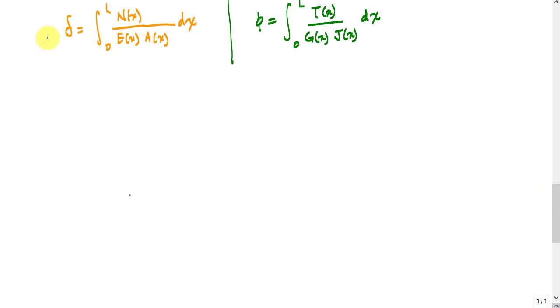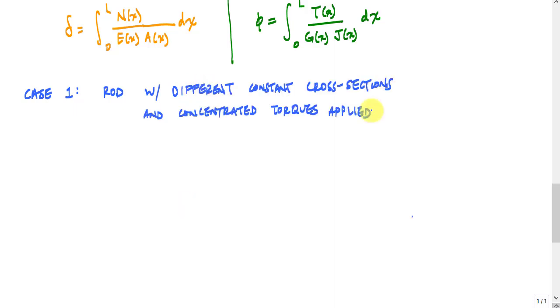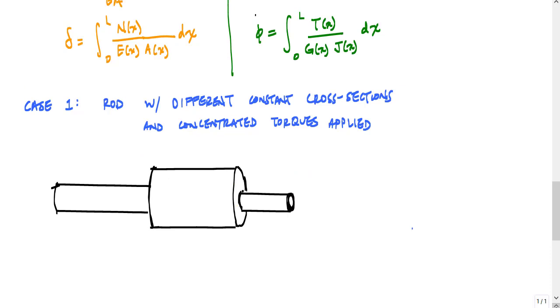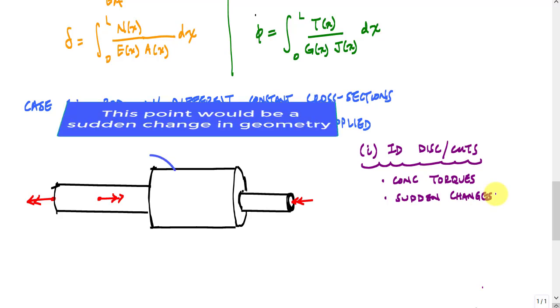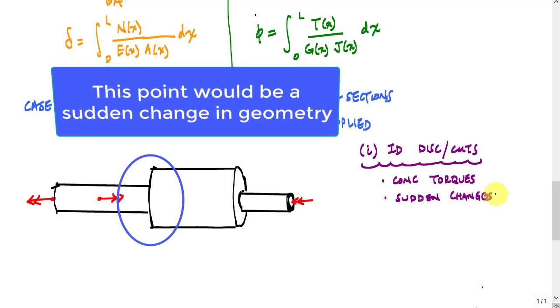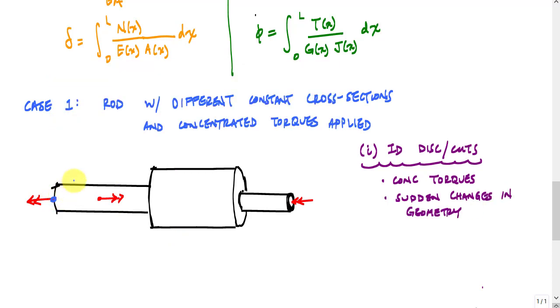So let's take a popular case, a rod that will have different constant cross sections and with concentrated torques. And it might look something like this. So I've got like three shafts kind of welded together, if you will. Maybe I have a concentrated torque here and here and here. What you want to do is identify discontinuities and cuts. And these discontinuities and cuts, at least for this case, are concentrated torques and sudden changes in geometry. And when I say sudden, I'm thinking like steps. So like I go from like 10 millimeter diameter, all of a sudden I jump to 20 millimeters in diameter. Like I have this concentrated torque here, so I'll call that A.